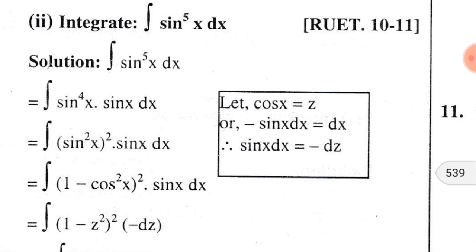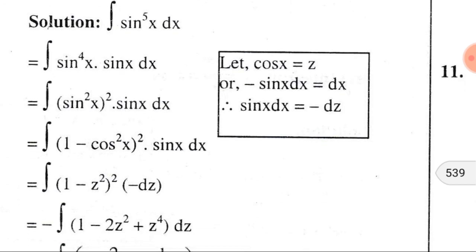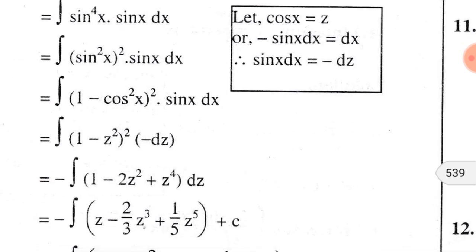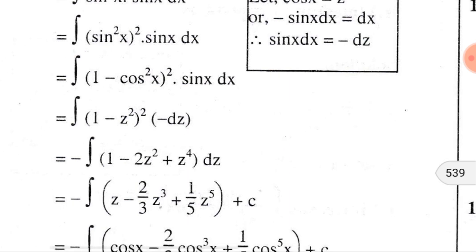Sin⁴x can be written as (sin²x)², and sinx dx remains. Sin²x can be written as 1 − cos²x. Now we consider cosx = z, and taking the differential of both sides of this equation, we get −sinx dx = dz, so sinx dx = −dz. Substituting these into the given integral, we get ∫(1 − z²)² · (−dz).